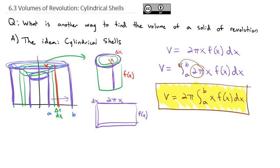That is the formula we'll use to find the volume of our three-dimensional solid of rotation by cutting into little cylinders across the region. An important note: in this example I rotated around the y-axis but integrated with respect to x. With disks, if you rotated around the y-axis, you integrated with respect to y. With shells, it's always the opposite — we always integrate in the opposite direction of the revolution.